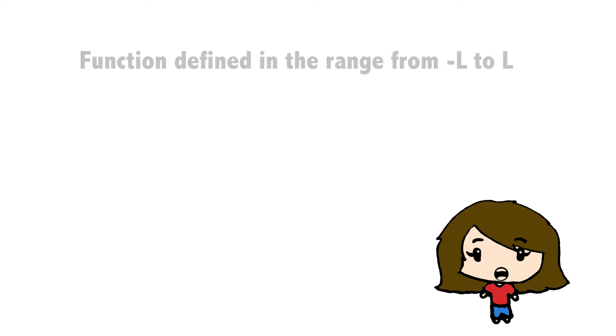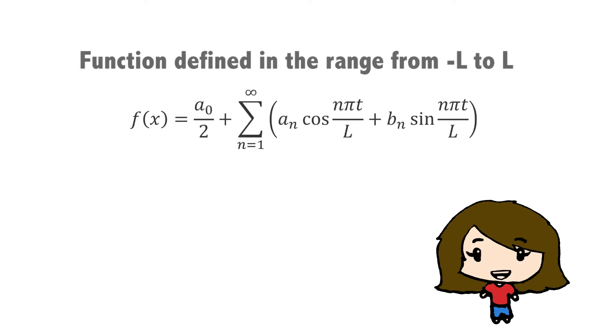If a function is defined in the range from negative L to L, the equation of Fourier series is shown, which a0, aN, and bN are Fourier coefficients.